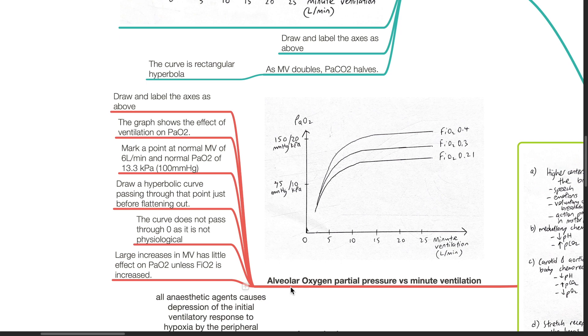This is a graph showing alveolar CO2 partial pressure versus minute ventilation. The x-axis is minute ventilation in liters per minute and the y-axis is increasing PaCO2. There are three curves of different FiO2. First, draw and label the axes. The graph shows the effect of ventilation on PaCO2.